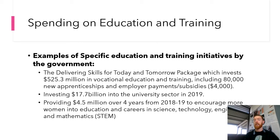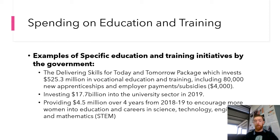Looking at specific education and training initiatives by the government: the first is the 'Delivering the Skills for Today and Tomorrow' package, which invests $525.3 million in vocational education and training, creating about 80,000 new apprenticeships and paying employers subsidies of $4,000 per apprentice they take on. This incentivizes businesses to take on apprentices, which is important for youth unemployment and helps create more jobs in the trades, which benefits the economy and our productive capacity.